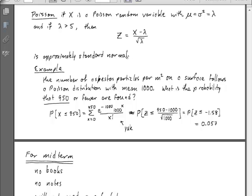We can do a little example. The number of asbestos particles per meter squared on a surface follows a Poisson distribution with a mean of 1,000. That's a pretty large number to have to count. What is the probability that 950 asbestos particles or fewer are found? Obviously we would not want to add the probability of finding 0, 1, 2, 3, etc. We would prefer to convert this to a continuous scale and just integrate from 0 up to 950. That would be a lot easier, and this guideline says that indeed we can do that.